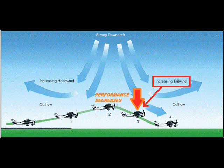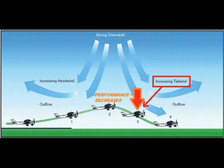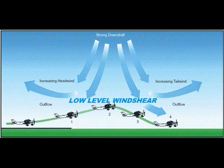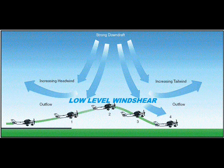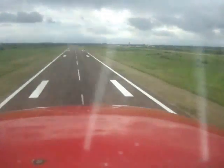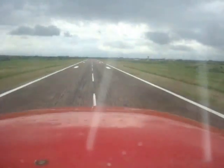The real danger of a microburst is that it creates low-level wind shear. The wind could change from headwind to tailwind pretty fast and if you're pretty close to the ground, such as in a takeoff or a landing, it could end up in disaster.